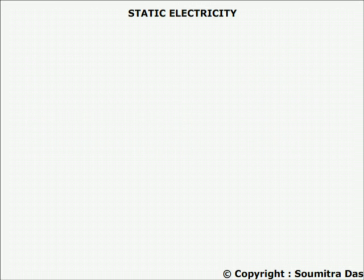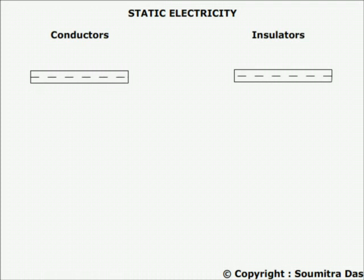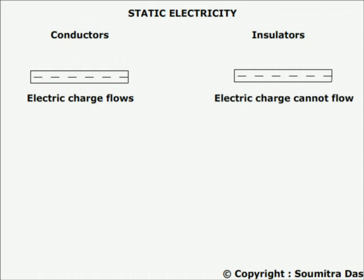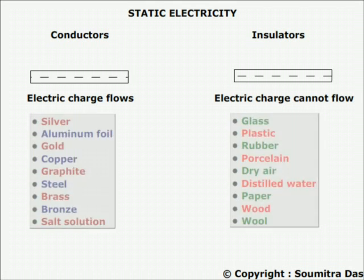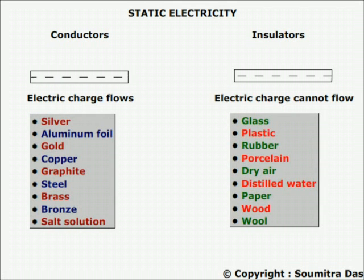Before starting, we should have a clear conception about conductors and insulators. A conductor is a material through which electric charge can flow, and an insulator is a material through which electric charge cannot flow. A table shows a list of conductors and insulators.